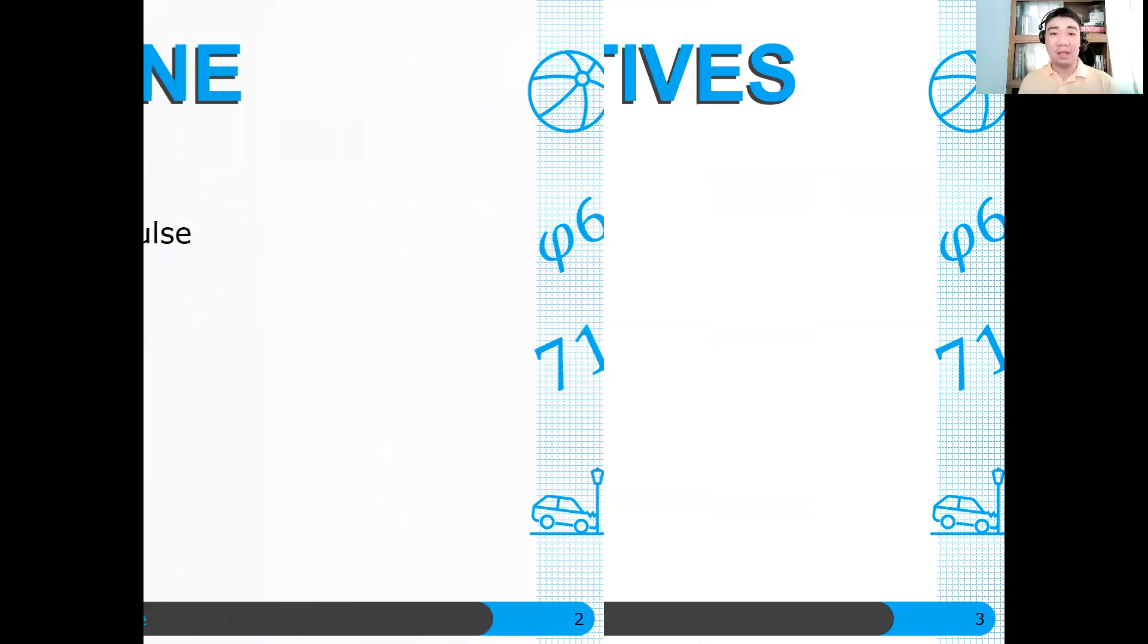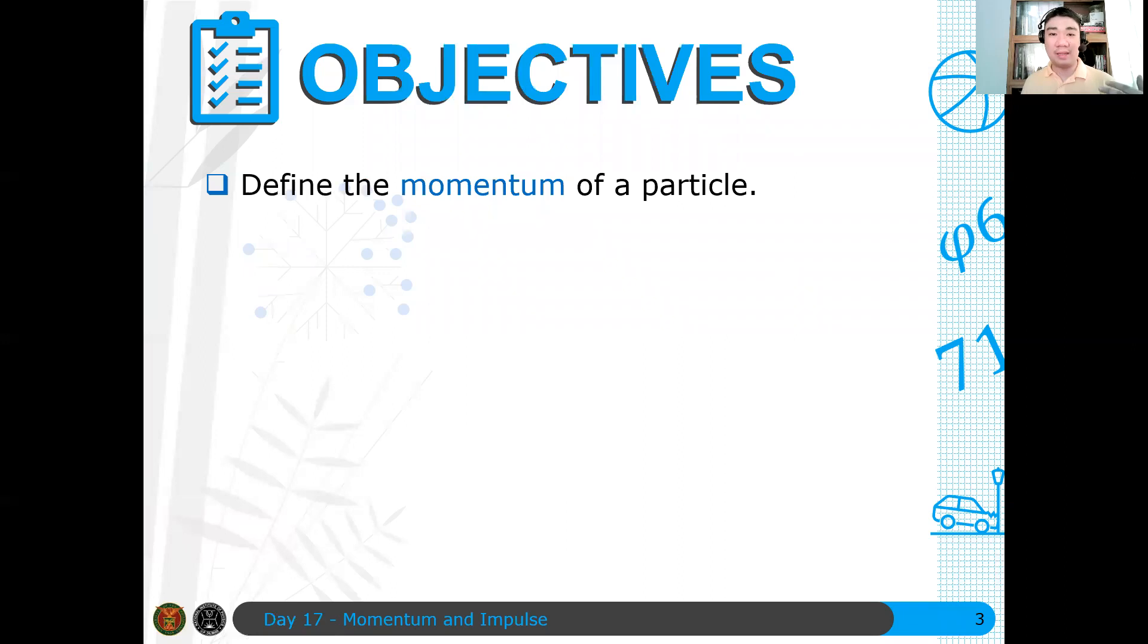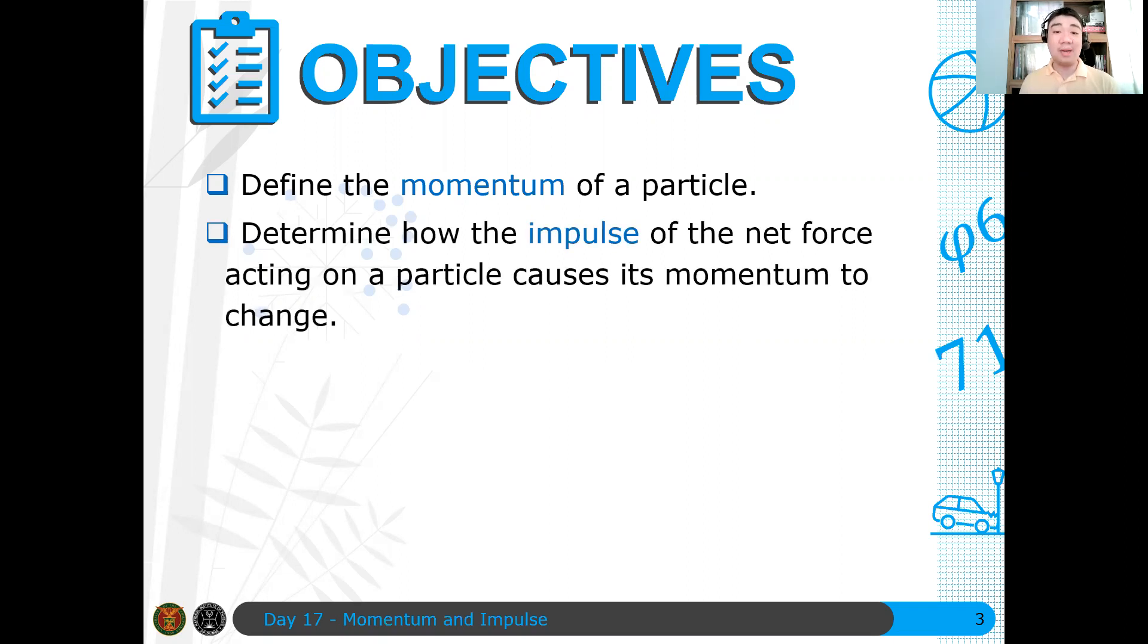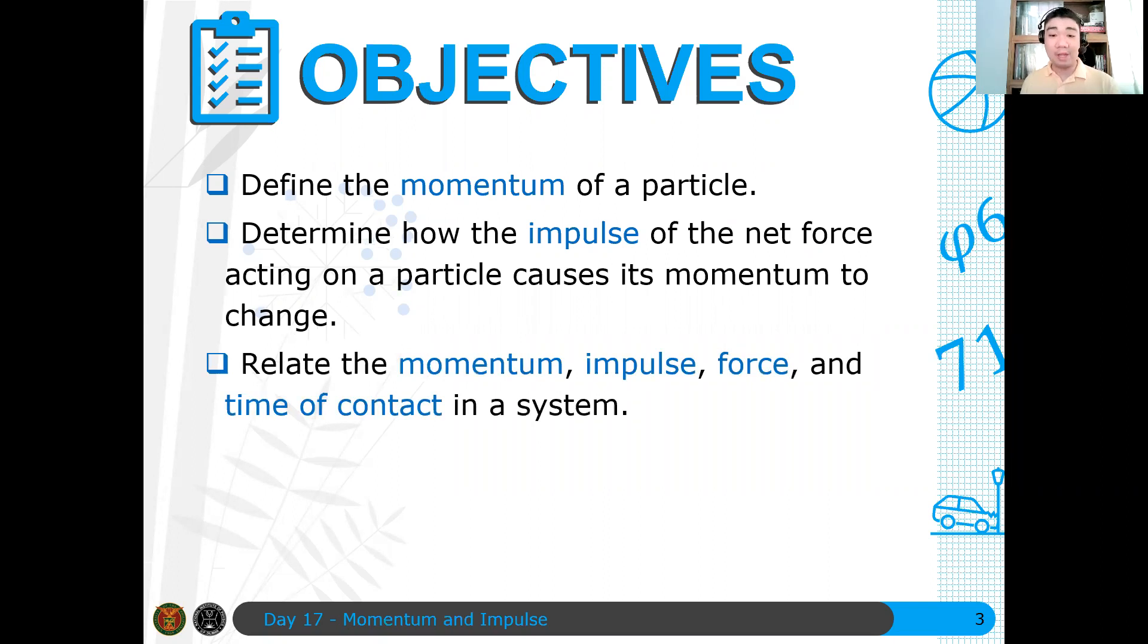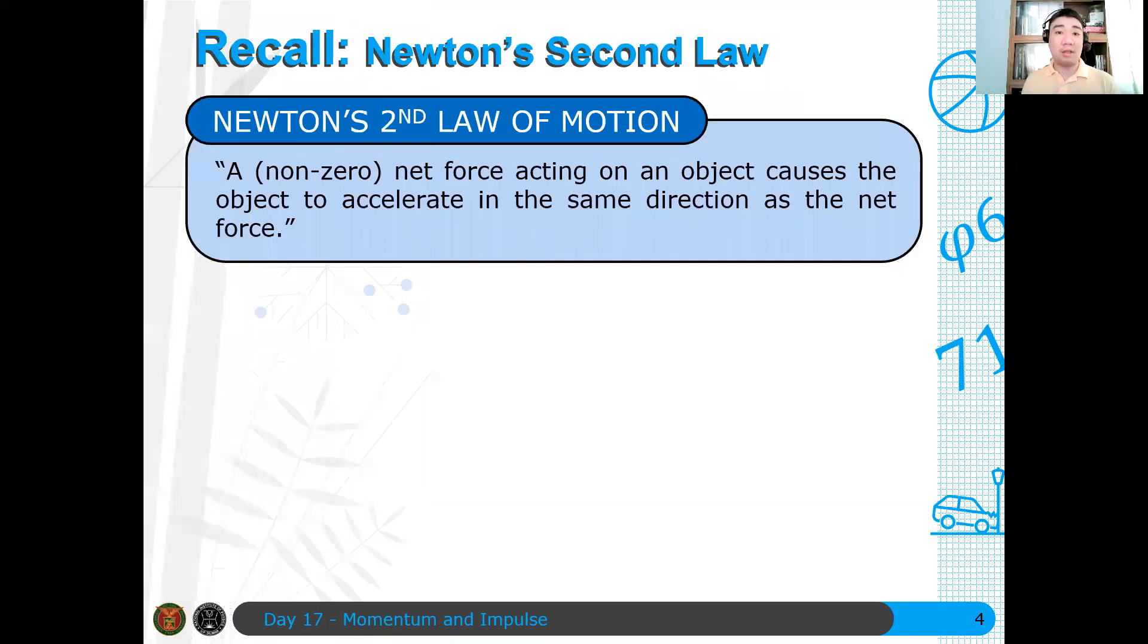What does momentum mean? In fact, Newton, we will see later that Newton actually explained or gave the axioms or the laws of motion in terms of momentum, not in terms of acceleration, I should say. It's still in terms of forces. And then next objective is we determine how the impulse of the net force acting on a particle causes its momentum to change. So impulse is a change in momentum using the so-called impulse momentum theorem. We will see that later. We will derive some expressions there. And we will relate the momentum, impulse, average force, and time of contact in a system. And then finally, we will also solve problems involving momentum and impulse.